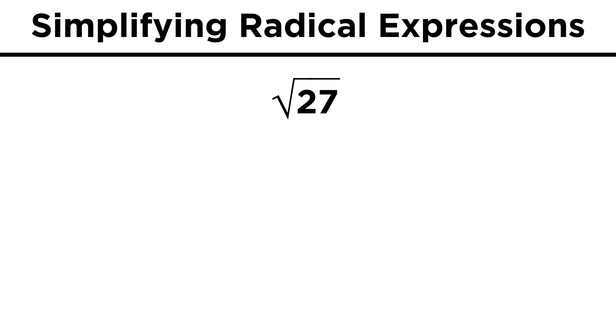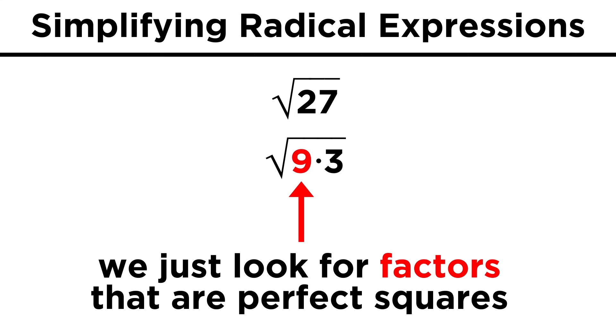We could say the same for root twenty-seven. Twenty-seven is nine times three, and root nine is plus or minus three, so we get plus or minus three root three. Just remember to look for any factors that are perfect squares in order to get these expressions to their simplest form.